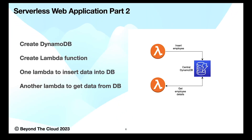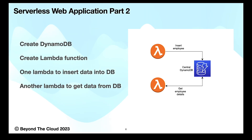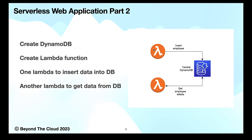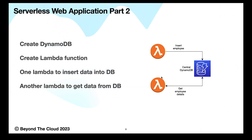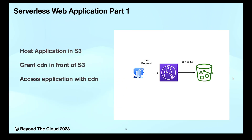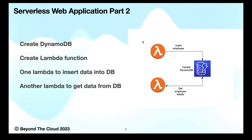Welcome to part two of serverless web application hosting. In this part, we will create our backend, which consists of a central DynamoDB database for serverless hosting. We will create two Lambda functions — one to insert data into the DynamoDB table and another to fetch data from it. Please check out part one where we hosted a dynamic web application with an S3 bucket and CloudFront. In part three, the coming video, we will integrate our frontend and backend with API Gateway.